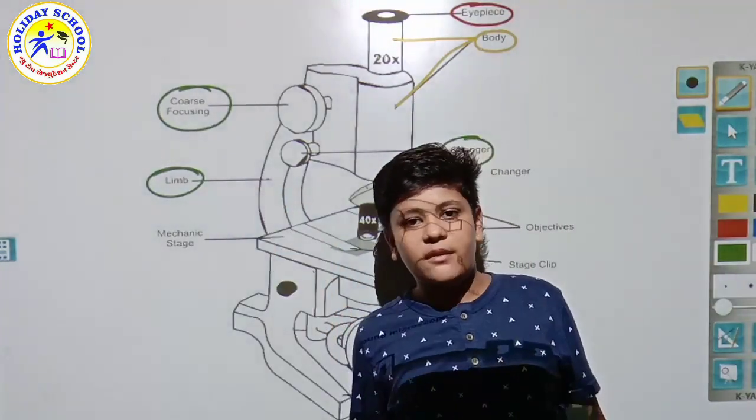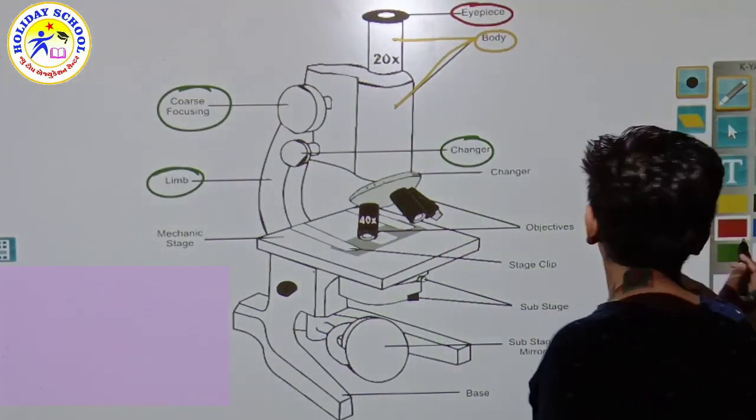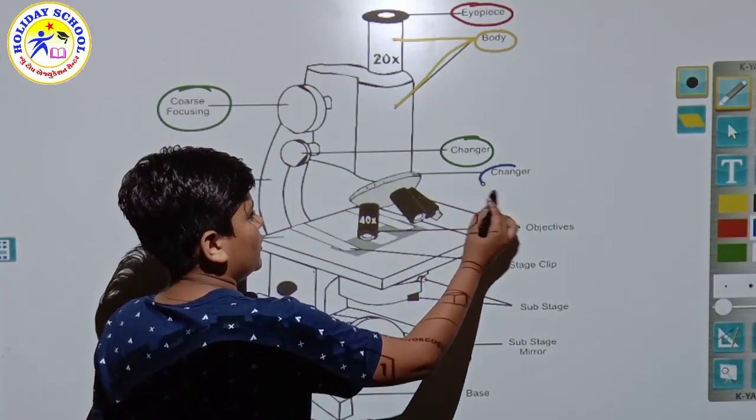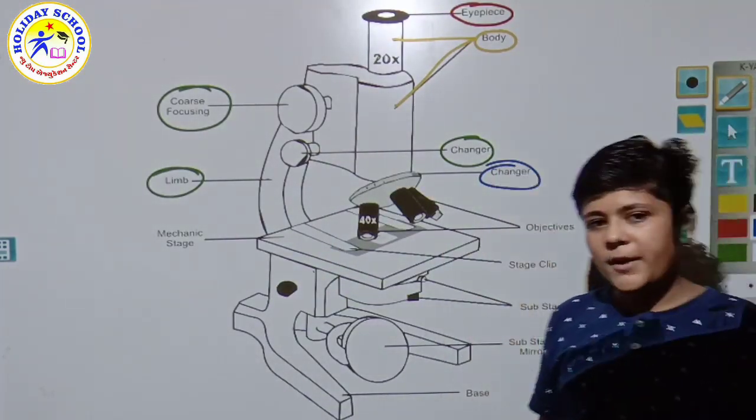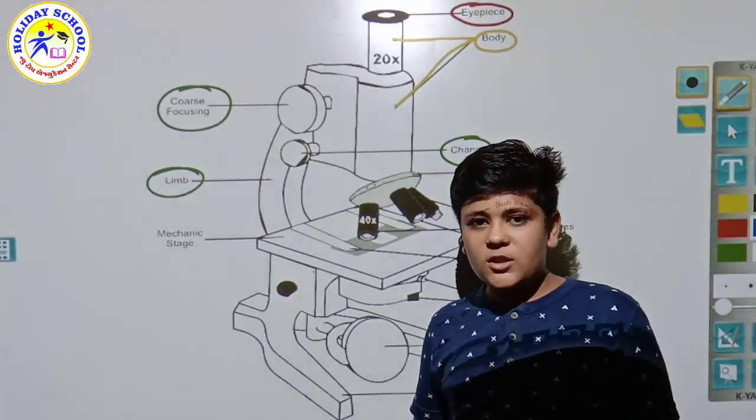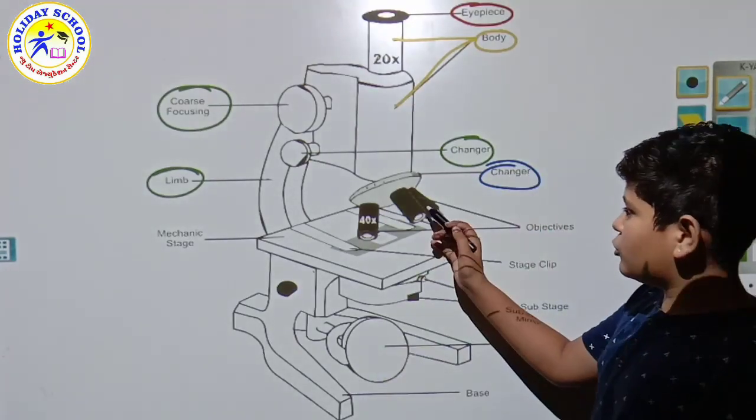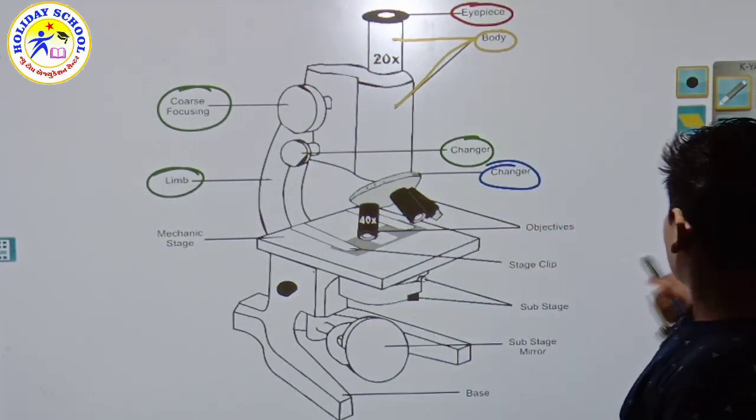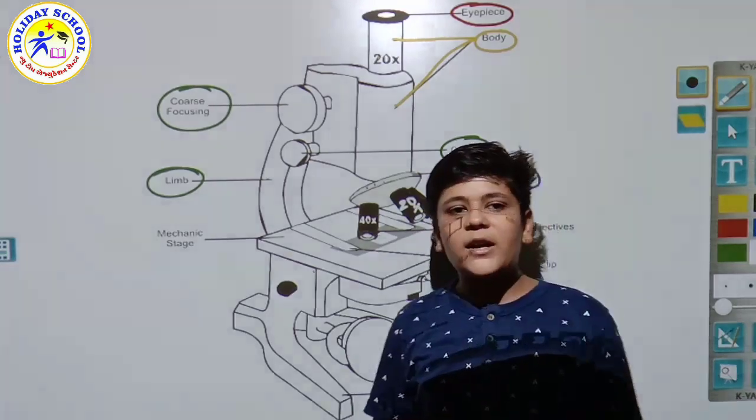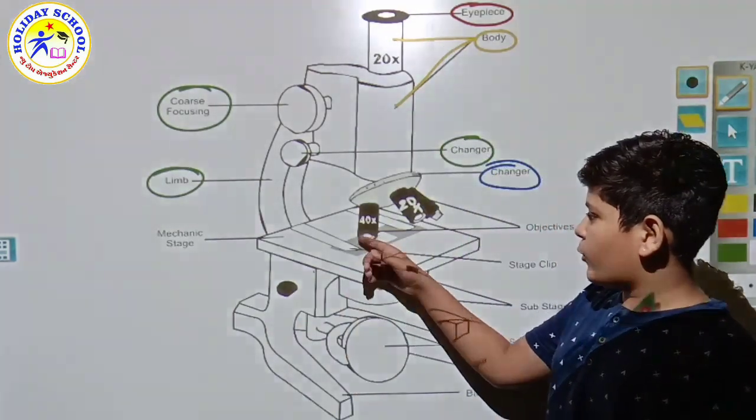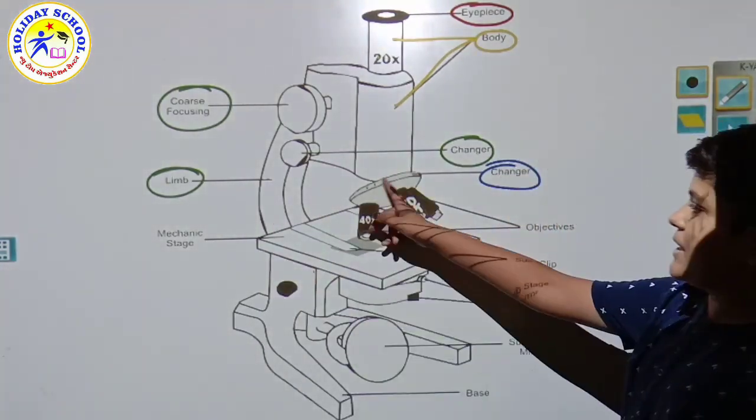After that, here is the changer. You might be confused - why are there two changers? Because different types of changes are done in different parts. This changer is for different lenses. Here it is written 40 times, here 20 times - different lenses are given: 40, 20, 100 times. To change those lenses, the changer is given there, this disc-like structure.